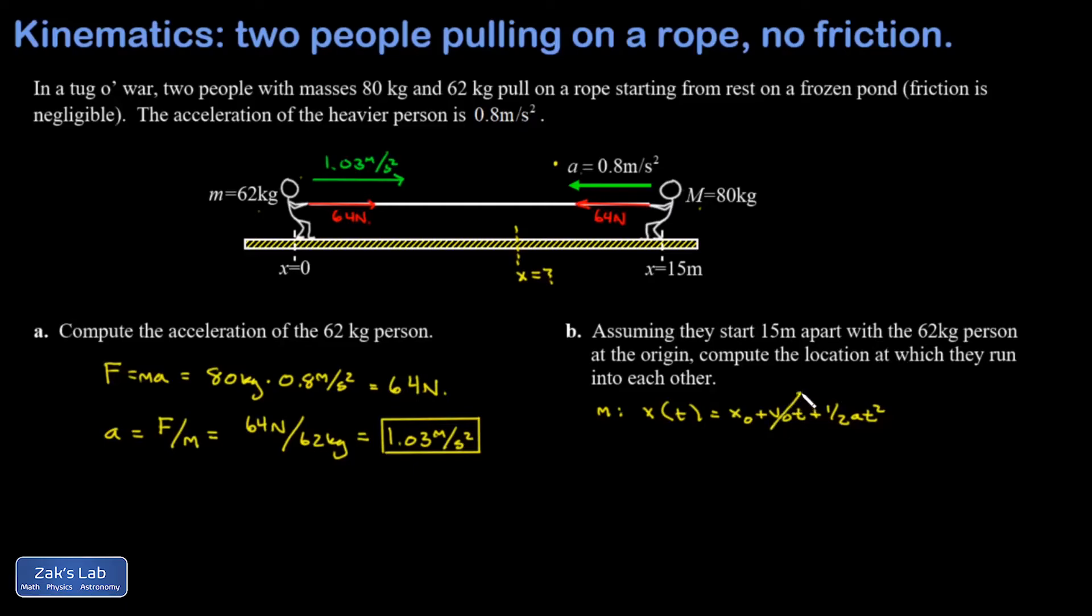The initial velocity was given as zero. The initial position for that person is zero because we put the origin there. And now I can write down their position as a function of time as one half a t squared, where a is 1.03.